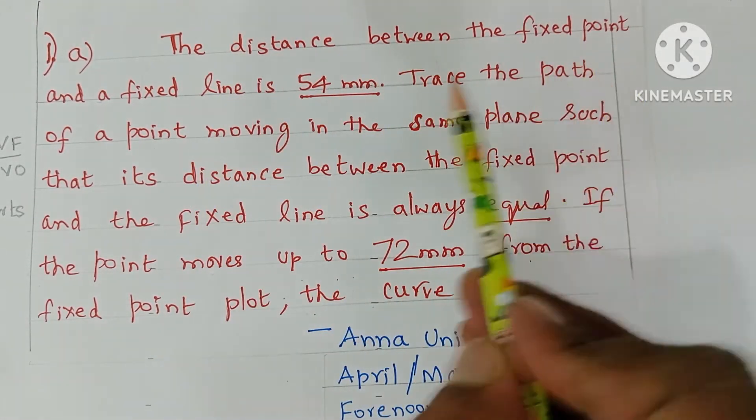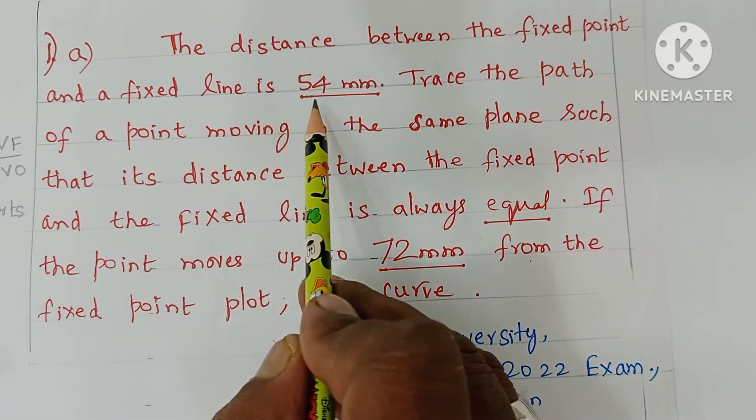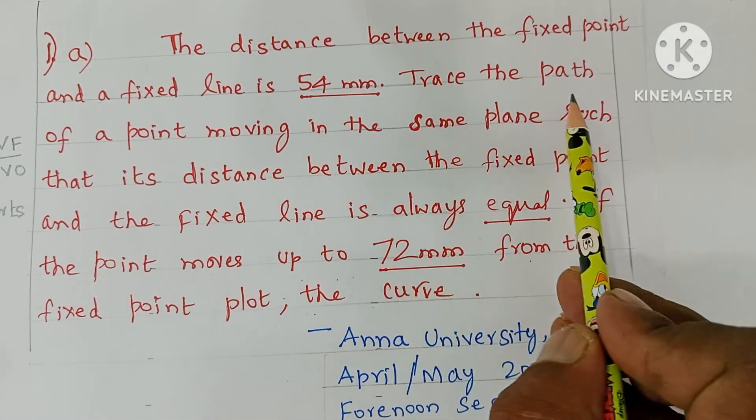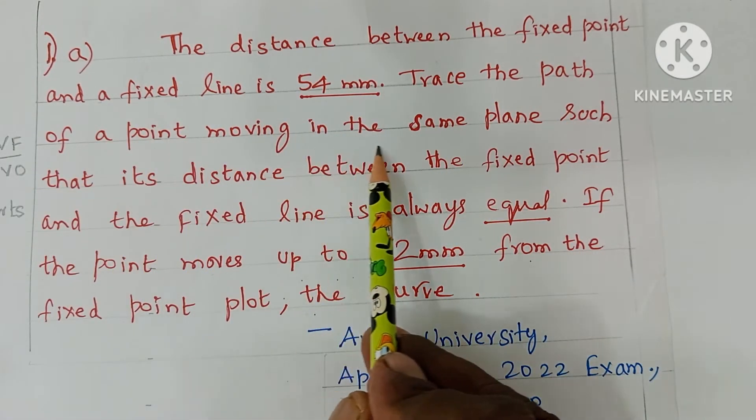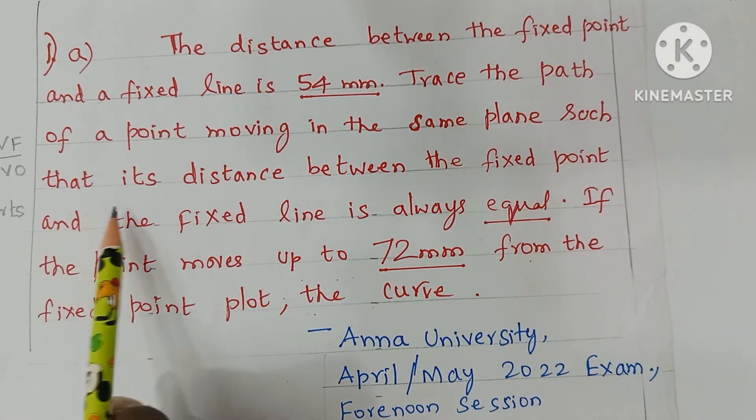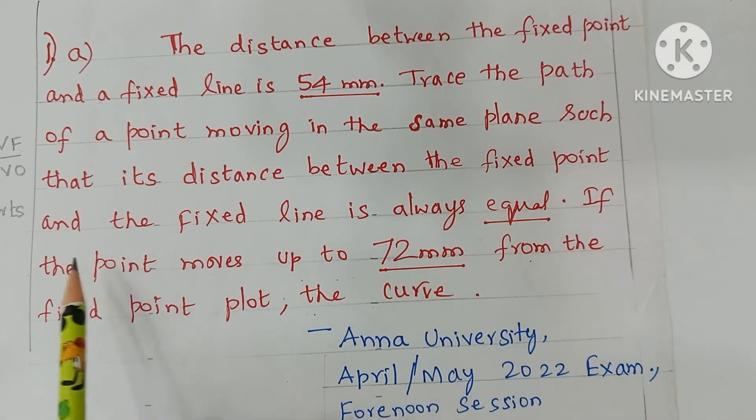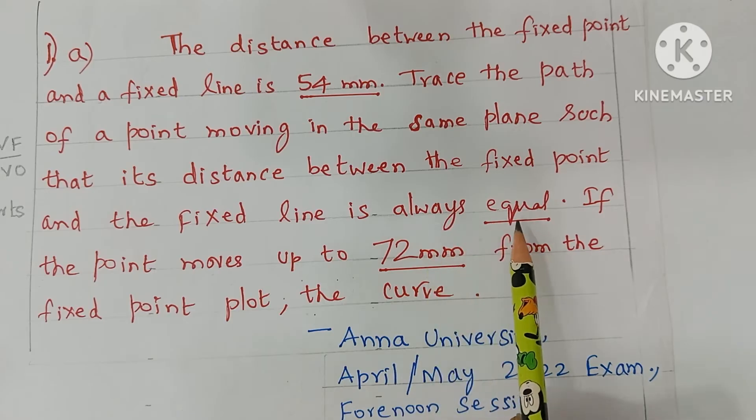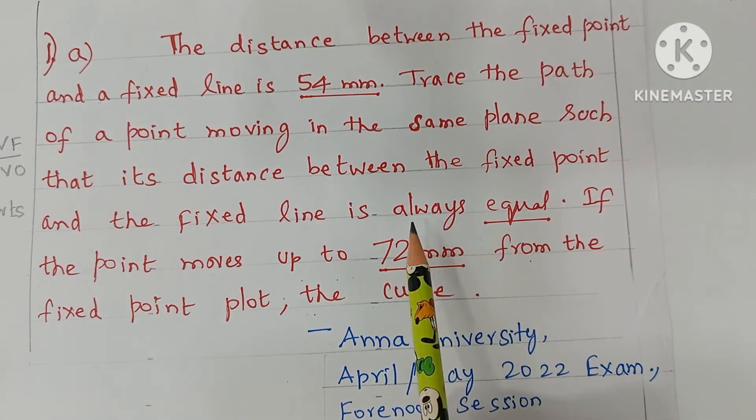The distance between the fixed point and a fixed line is 54 mm. Trace the path of a point moving in the same plane such that its distance between the fixed point and the fixed line is equal. It is always equal. If the curve comes from the parabola, indirectly it is mentioned or the data is given.